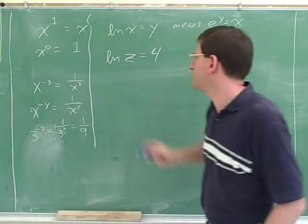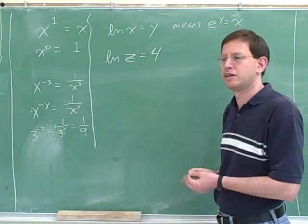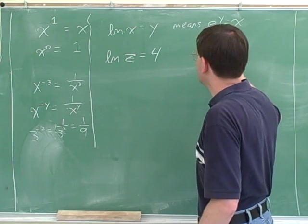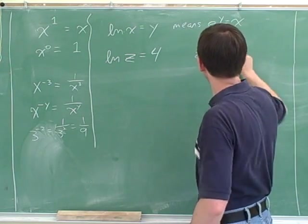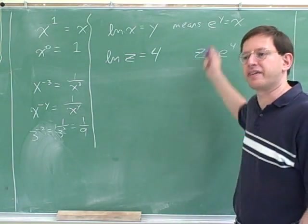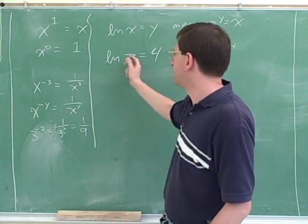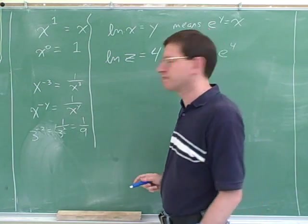For example, how would I solve this for z? e to the fourth. Yeah, z equals e to the fourth. And then you could use your calculator to figure out what z is, right? Because there's an e button on your calculator. All right, so this is how we can solve when the variable is inside the logarithm.